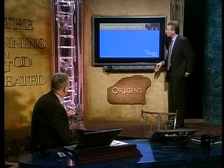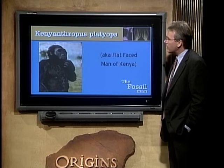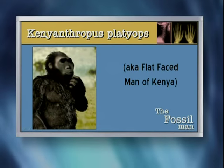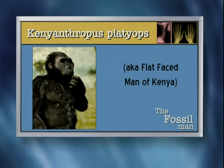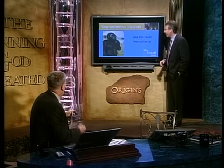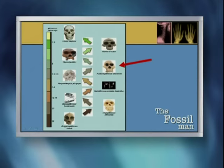We keep moving our way up the chart. This actually is a picture of what Mr. Kenyanthropus platyops is supposed to look like, the flat-faced man of Kenya. Sadly, when our young people see an image just like that, they assume that National Geographic just ran out with their handy-dandy camera and took a picture of this creature from long ago.